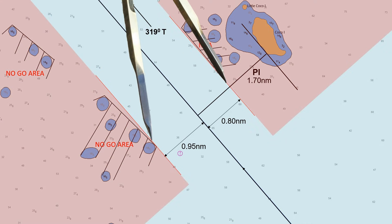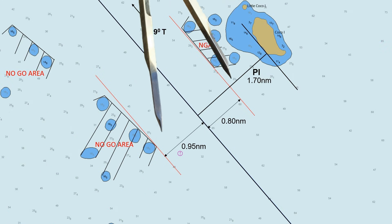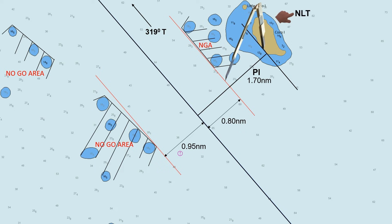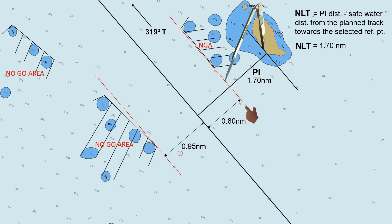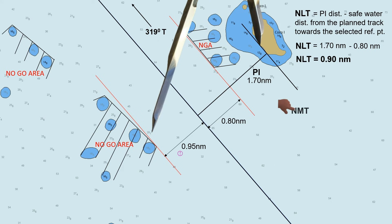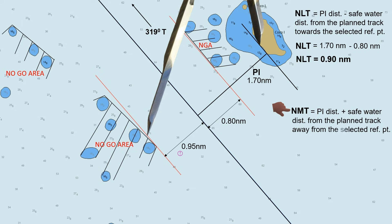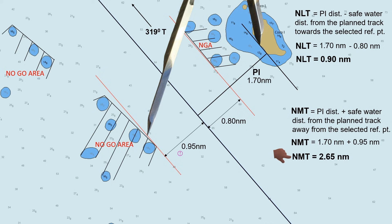This is now the corridor for the navigable water as the ship passes along this area. To determine the not-less-than or NLT line, we need this parallel distance. NLT equals PI distance minus the safe water distance from the planned track towards the selected reference point. The PI distance is 1.70, minus the starboard safe water distance of 0.80, so the not-less-than PI line is 0.90 nautical mile. To find the not-more-than or NMT line, NMT equals PI distance plus the safe water distance from the planned track away from the selected reference point. So PI distance is 1.70, plus the port safe water distance of 0.95 — the not-more-than PI line is 2.65 nautical miles.